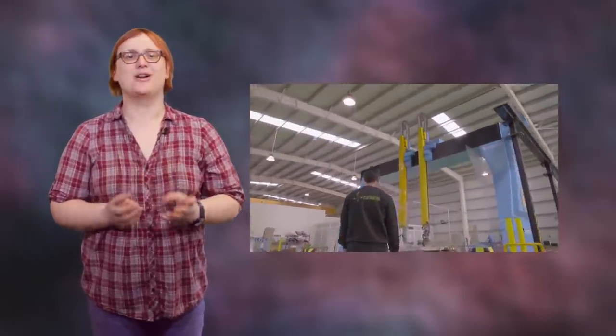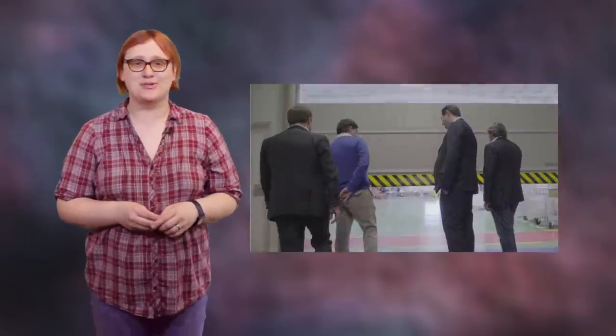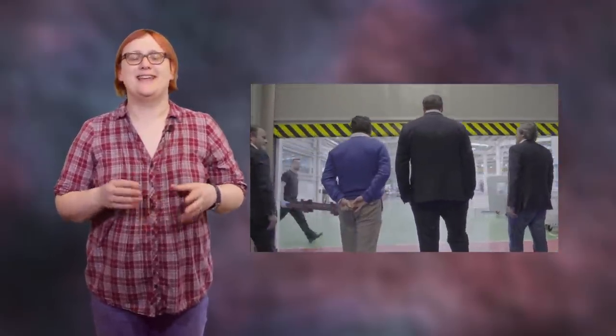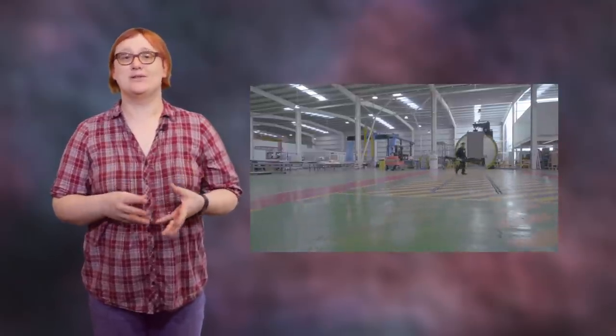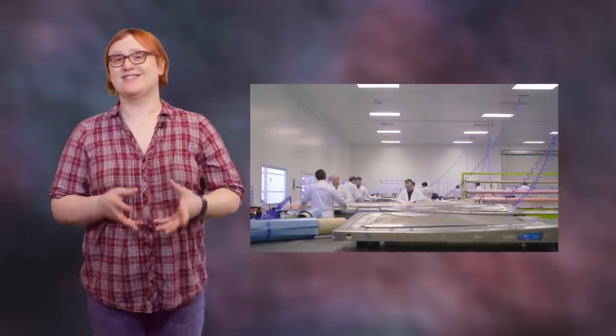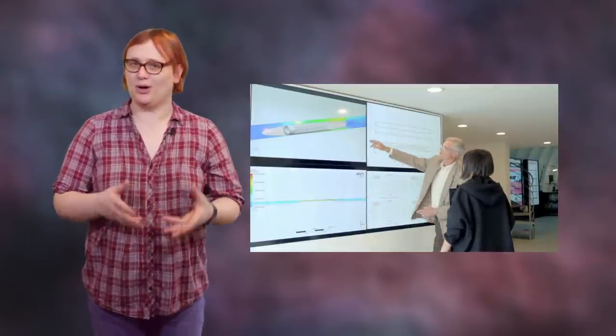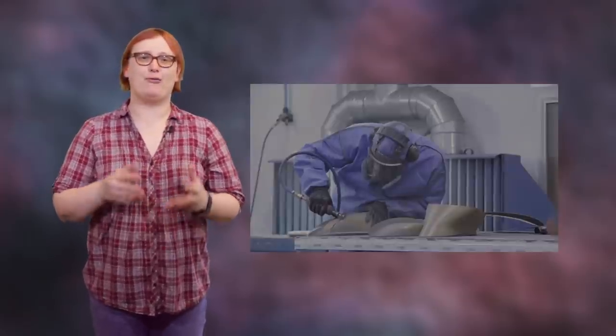Which brings us to the other example from Hyperloop One's rival, HTT. HTT has just released this video and photographs of what it says is the world's first full-scale passenger Hyperloop capsule. Measuring 100 feet in length and 8.85 feet in diameter, that's about 30 meters long and about 2.4 meters diameter wide, this mock-up is larger than Hyperloop One's pods within a pod, but could carry between 28 and 40 passengers every trip.